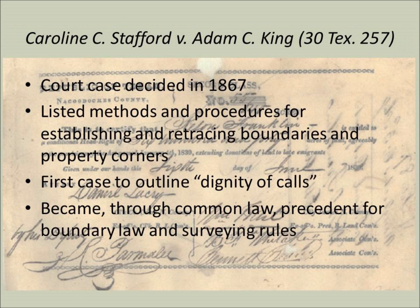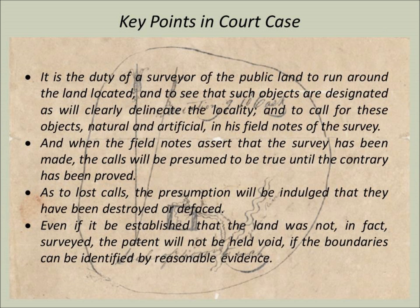To land surveyors in Texas, the court case of Caroline C. Stafford v. Adam C. King, filed in Volume 30, Texas Supreme Court, page 257 in 1867, remains one of the most important cases that guide and direct the way boundaries and corners are identified and established. Decided by the Texas Supreme Court during an appeal in April 1867, the case broadly and specifically describes the methods by which surveyors are expected to follow the footsteps of the previous surveyor and his work to locate and define real property boundaries.